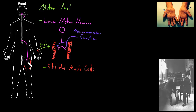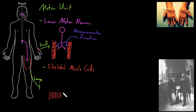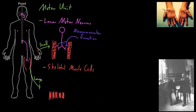Large muscles that do not need rapid precise control, like those in the trunk and limbs — like these big muscles in the thigh — usually have large motor units, with each lower motor neuron synapsing on a large number of skeletal muscle cells. There could actually be many hundreds of individual skeletal muscle cells in a single motor unit of these big muscles, and the lower motor neuron for that motor unit would have lots more axon terminals forming neuromuscular junctions with all of those skeletal muscle cells.